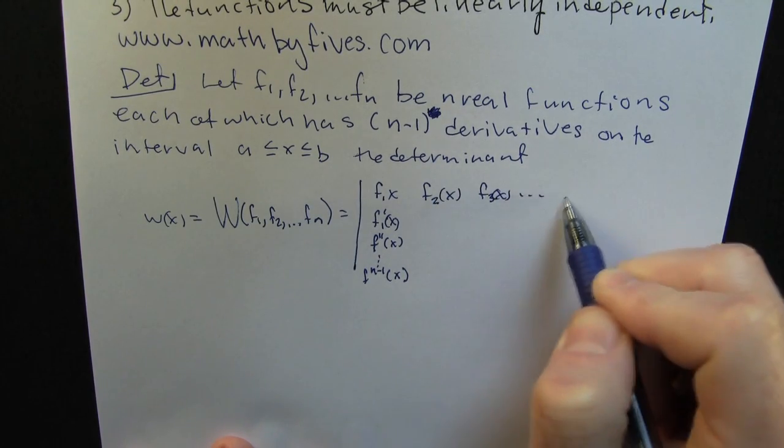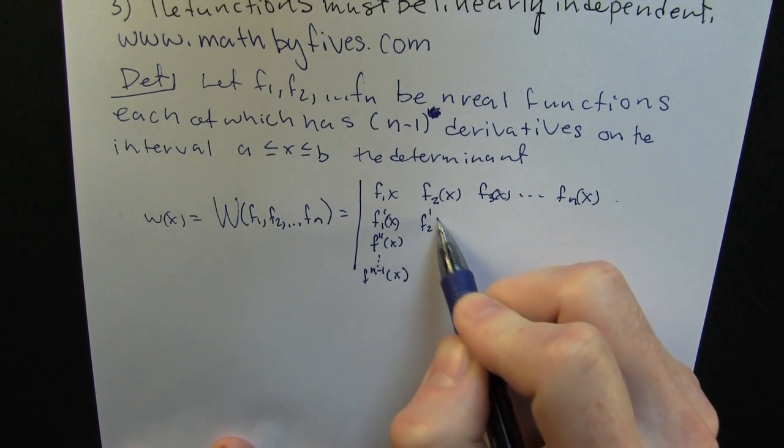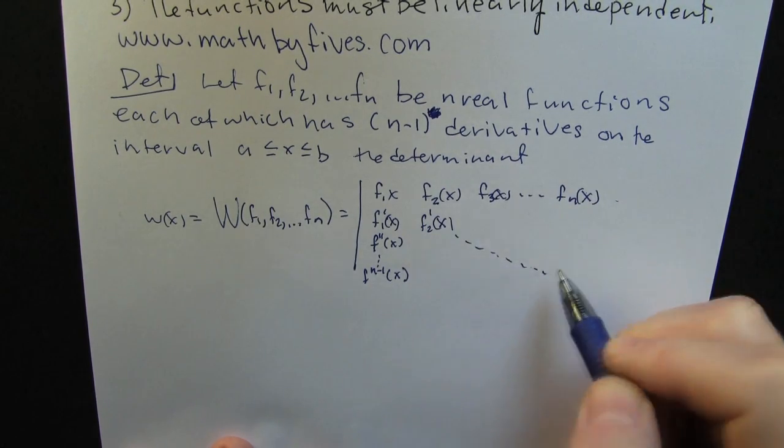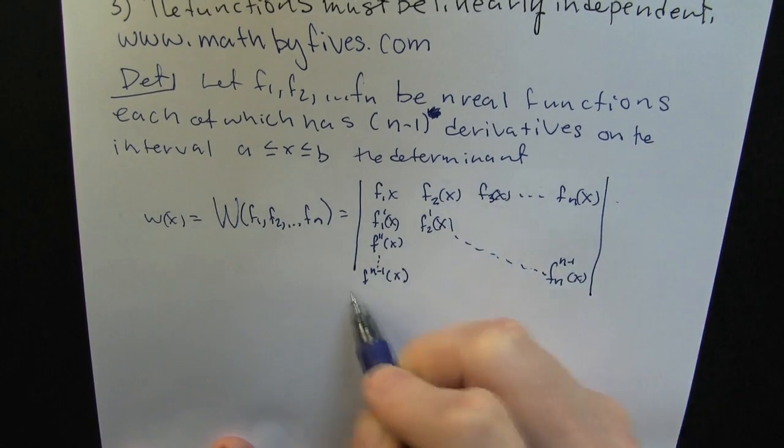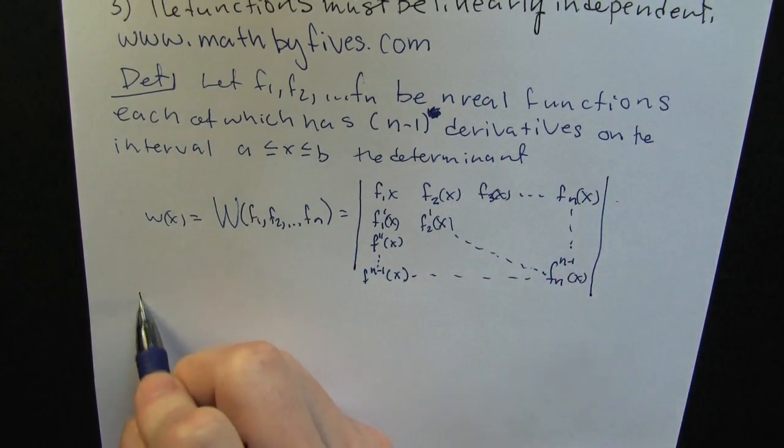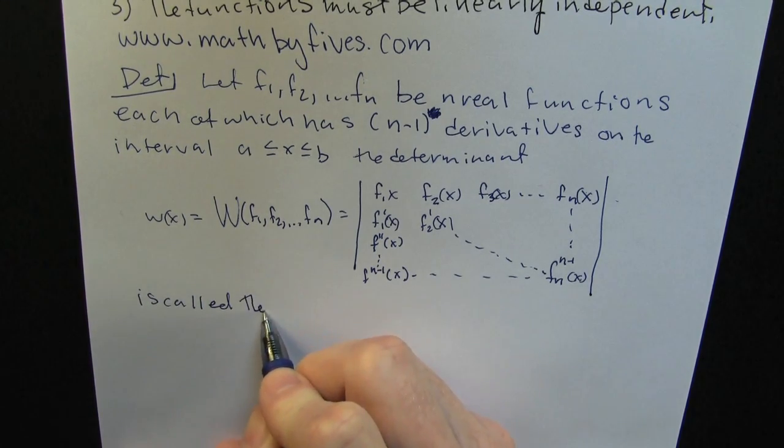The Wronskian is gonna be the determinant of the derivatives of the function. You'll take each function and line them across the top row, and then you're gonna go and take the n minus 1 derivative all the way down. What's this gonna do? It's gonna create a square array that's gonna allow us to take the derivative of the guy. And that's how we define the Wronskian.